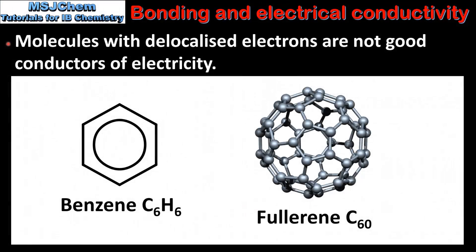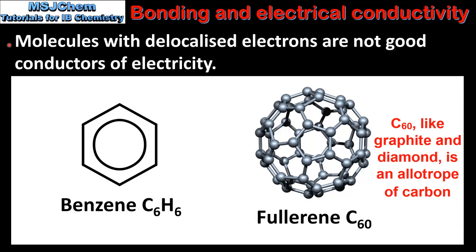It's important to note that molecules with delocalized electrons are not necessarily good conductors of electricity. Two examples are benzene and fullerene C60. Even though these molecules have delocalized electrons, they are poor conductors of electricity. The reason is that the delocalized electrons are only free to move within the molecule and not between molecules. Therefore both are poor electrical conductors despite having delocalized electrons.